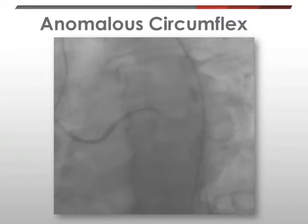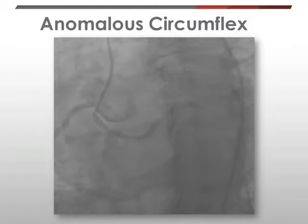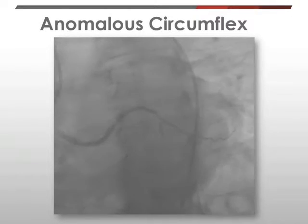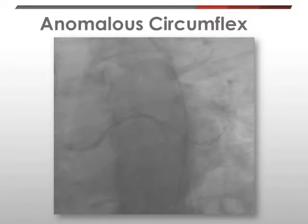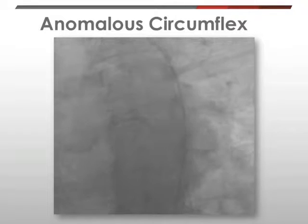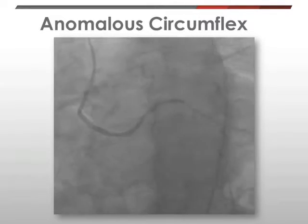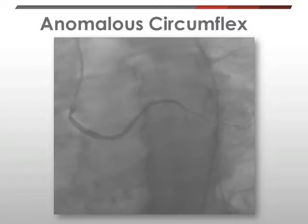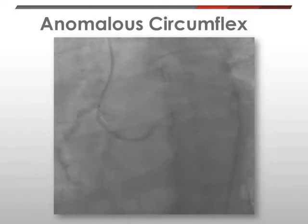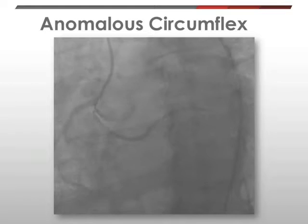I did not appreciate anomalous left circumflex arising from the right coronary cusp with a standard injection via JR4 diagnostic catheter, and often these vessels have an inferior takeoff. Therefore I elected to perform injection with a multipurpose catheter, successfully now visualizing the anomalous takeoff of the circumflex from the right coronary cusp, as you see here in this view.